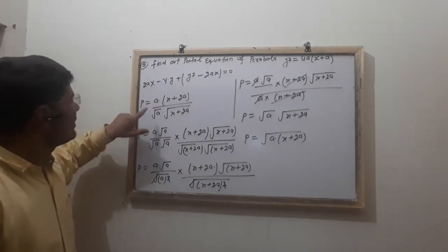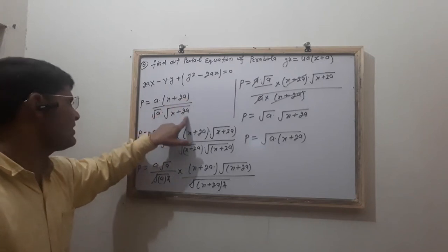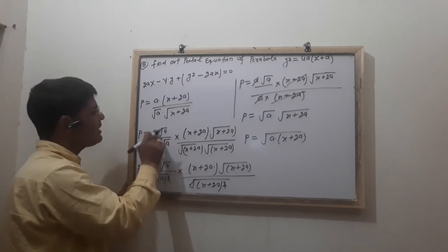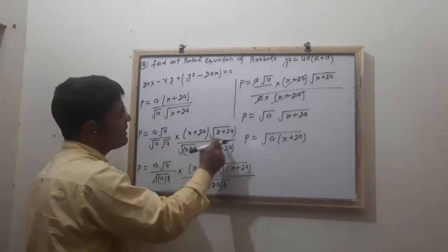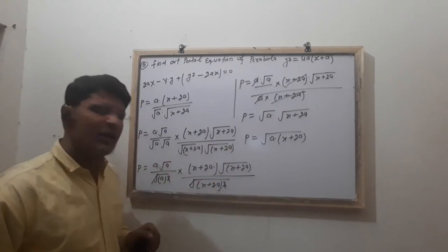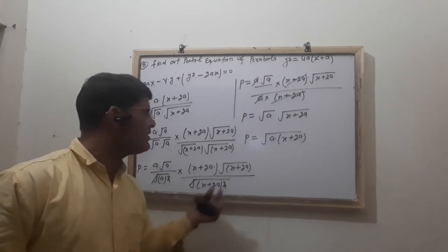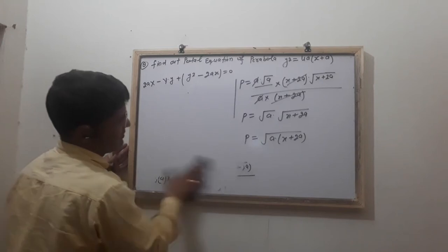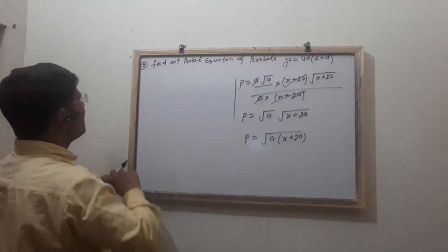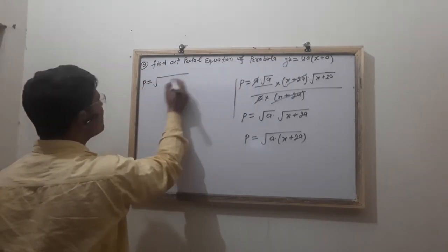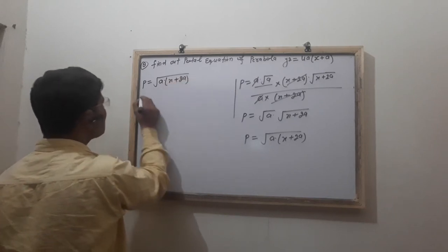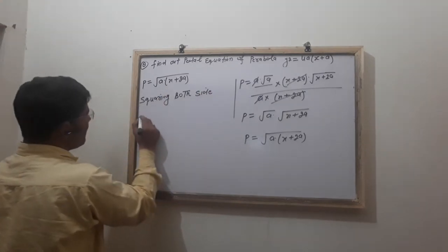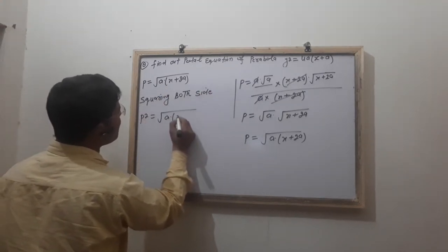Repeating the result: the calculation gives A upon X plus 2A under root A under root X plus 2A. By multiplying under root A in numerator and denominator, and under root X plus 2A in both, after solving T equals A into root X plus 2A. Squaring both sides, T square is equal to A into X plus 2A.